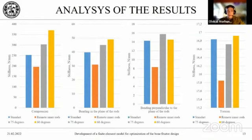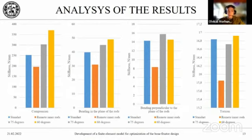From the obtained displacement results, we find the stiffness of the system by dividing the applied force by the largest displacement. After comparing the stiffness of the systems, we can conclude that locating the internal rods at an angle to the axis of the bone — namely at 60 degrees — makes the bone–exfix device system more stiff. Therefore, the displacement of parts of the broken bone relative to each other under loads will be smaller, which will speed up the patient's recovery period.